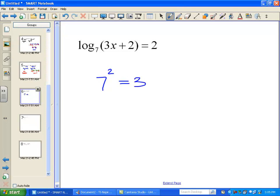and that would be exponential form. So I'm going to say the base of 7 raised to the power 2 is equal to the number 3x plus 2, and now it's a really simple equation. I just have to simplify. I'll call 7 squared 49 equal to 3x plus 2,